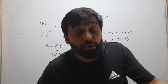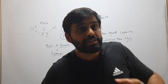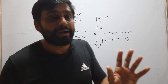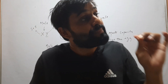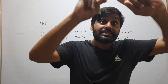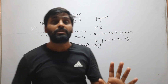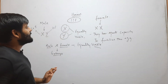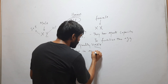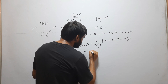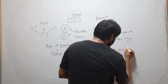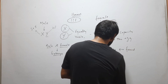Primary sex ratio is hard to determine because of cases of abortion and other situations. But we can easily determine secondary sex ratio — that is, how many males and females are born. When secondary sex ratio is determined across the world, it is found that the ratio is not 1; more males are found than females.